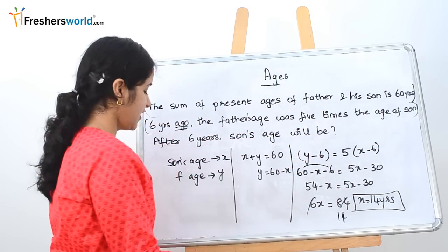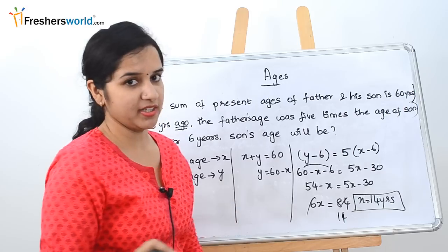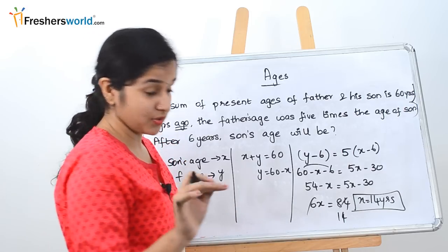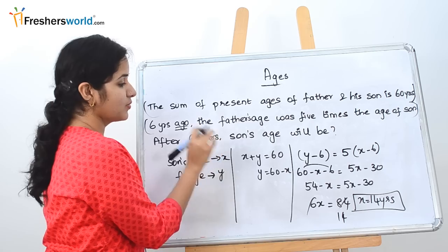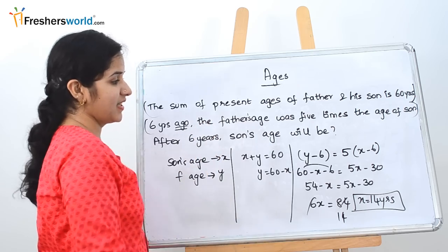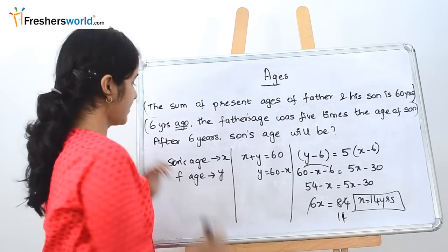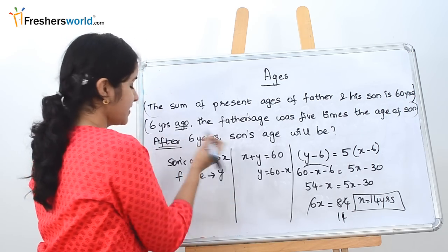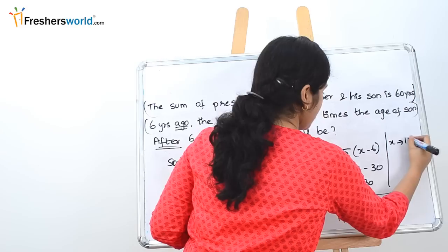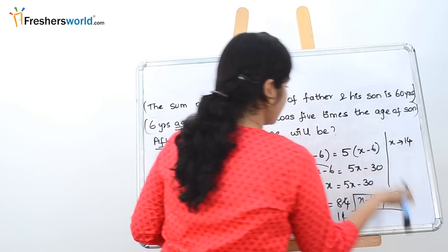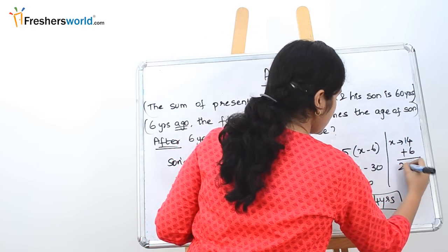x is the son's age, which is 14 years. But are they asking for the son's present age? No — read the question again. They are asking: after 6 years, what will be the son's age? 'After' means we add. Present age of son is 14 years; after 6 years: 14 + 6 = 20 years. The answer is 20 years.